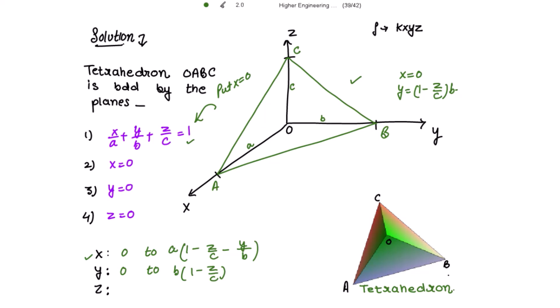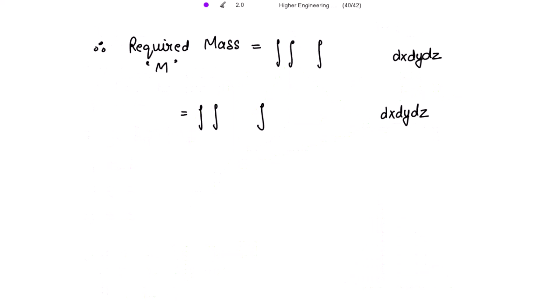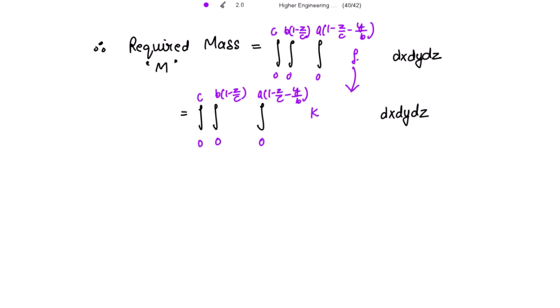For the outermost integral, the limits of z are constants: z varies from 0 to c. So the triple integral has limits: x from 0 to a(1 minus z/c minus y/b), y from 0 to b(1 minus z/c), and z from 0 to c. The integrand is rho equal to k x y z.